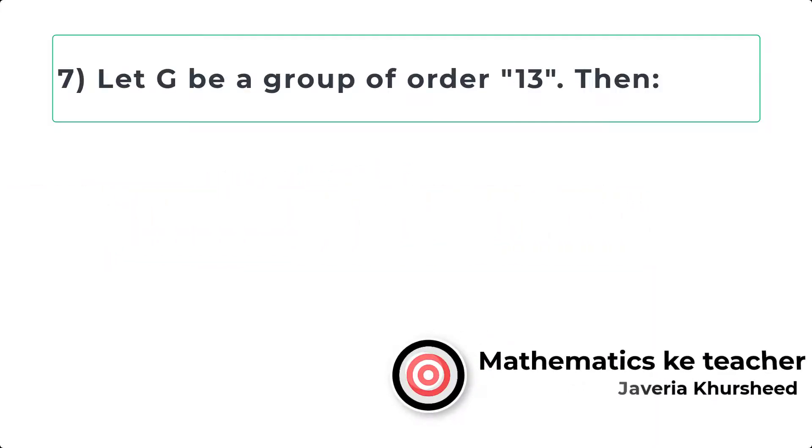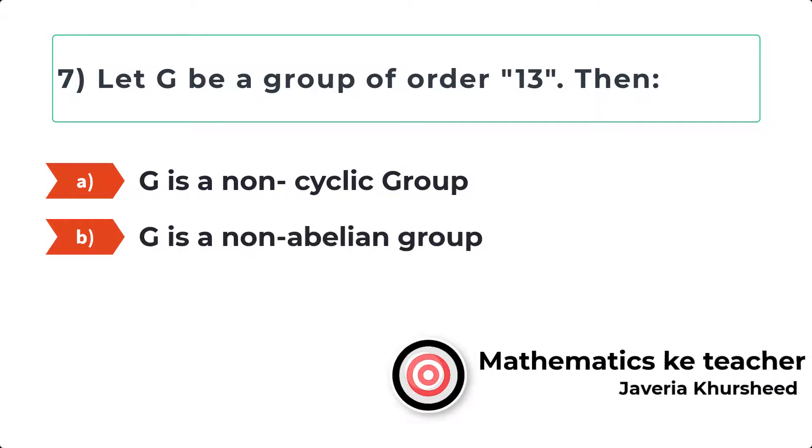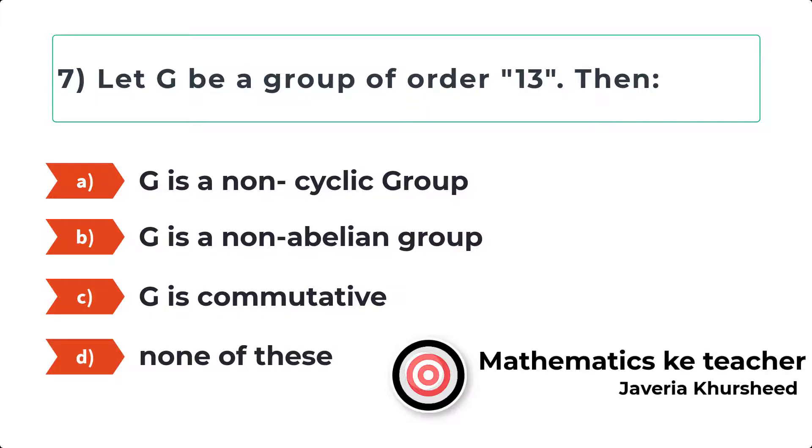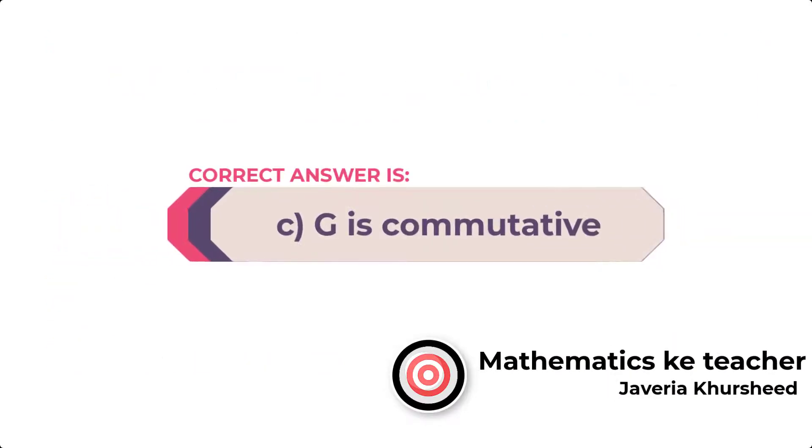Question 7: Let G be a group of order 13, then: A, G is a non-cyclic group; B, G is a non-Abelian group; C, G is commutative; D, None of these. Correct answer is C, G is commutative.